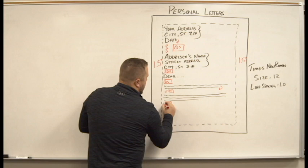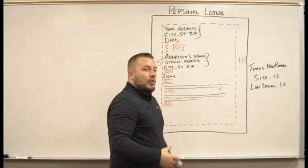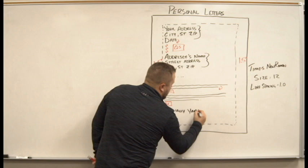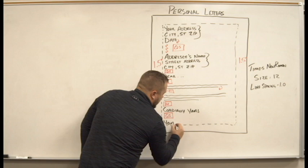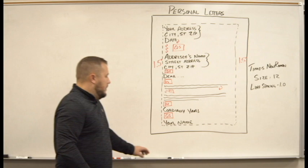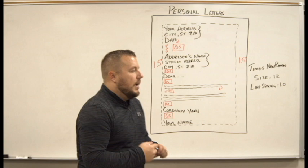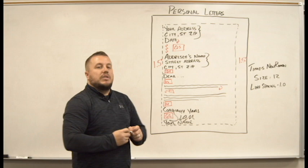Once we're done with the body, we're going to hit another double space. This is where you'll put your closing — 'Sincerely,' 'Yours truly,' or if it's a closer relationship, 'Cordially yours.' Then a quadruple space — hit Enter four times — and then your typed name as the last line. Once it's printed out, you're going to come back and sign your name between 'Cordially yours' and your typed name.